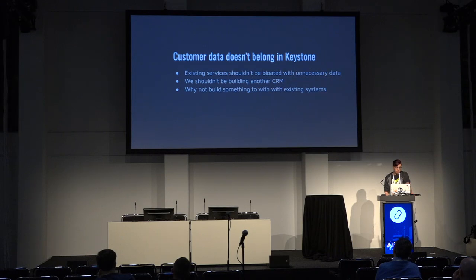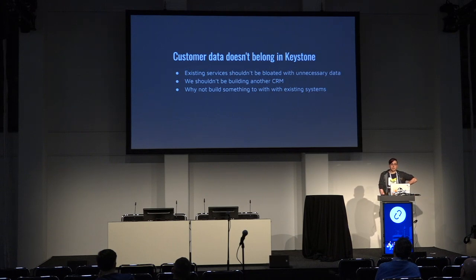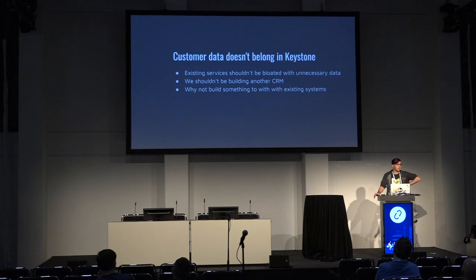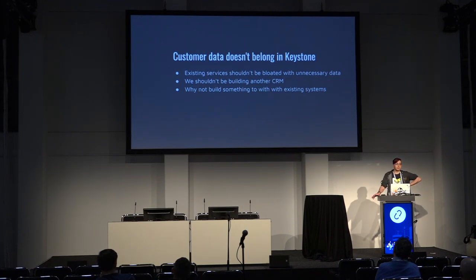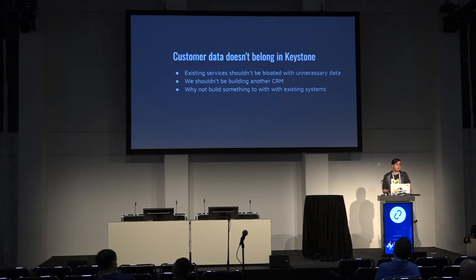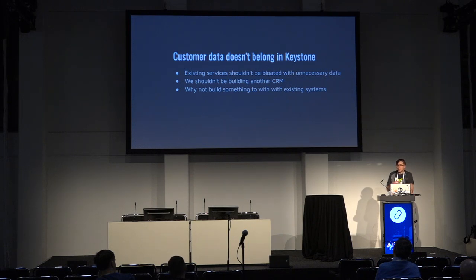One of the biggest problems is that customer data doesn't really belong in Keystone. When you're dealing with things like addresses and phone numbers, you don't really have anywhere to put that, and Keystone isn't the right place for it. It has fantastic primitives for users, project information, and access control, but if you're trying to build a customer entity out of that, you need way more. The customer exists in far more than that concept, and OpenStack doesn't need that information.